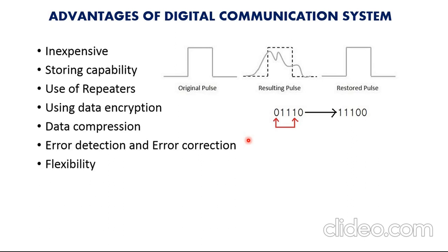Number seven is flexibility, meaning flexible hardware implementation. If the system is getting changed, then by changing programs, we can use it for other applications. In analog communication systems, we cannot have this flexibility where hardware can be reused for other applications, but in digital communication this flexibility is available by changing the program. Number eight is easier multiplexing. In digital communication, speech, video, image, and other data may be merged and transmitted over a common channel using multiplexing, such as time division multiplexing and frequency division multiplexing.